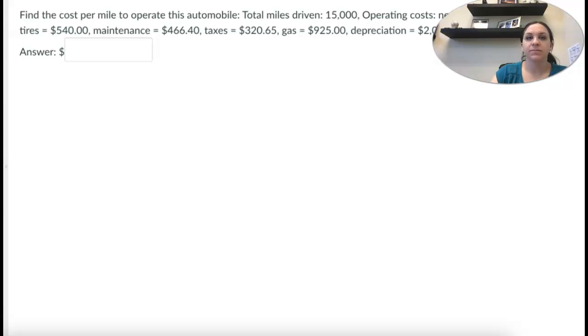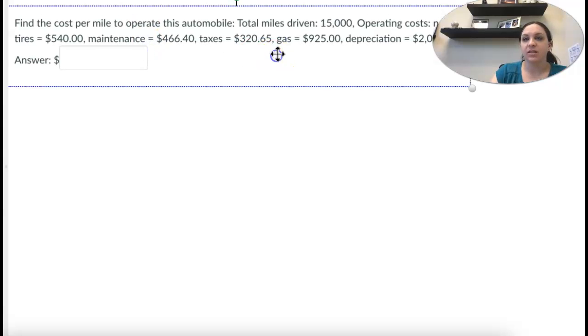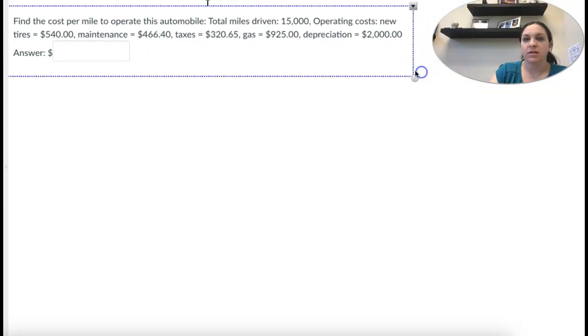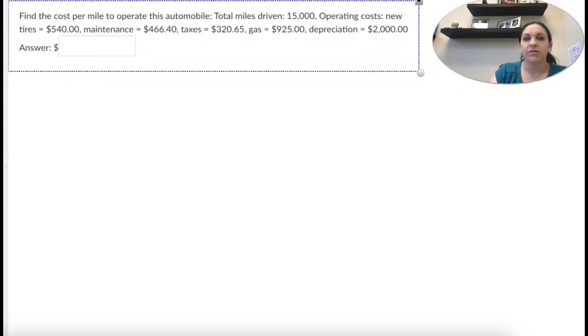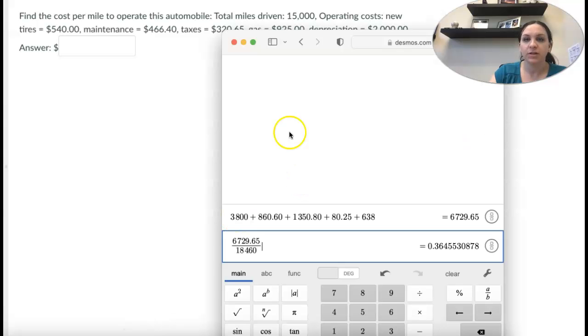Okay, let's do another one. So find cost per mile, 15,000 miles. Then we have all these operating costs. So we're going to add up all the operating costs.